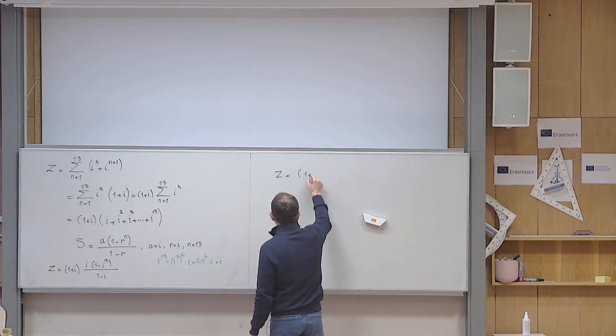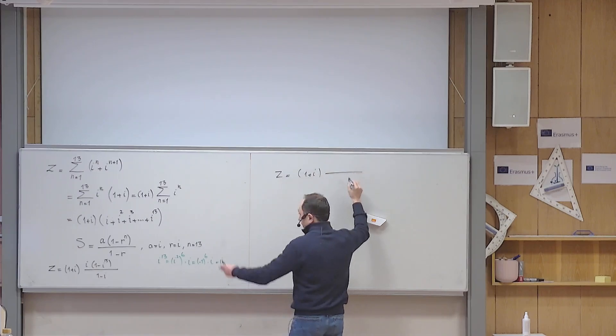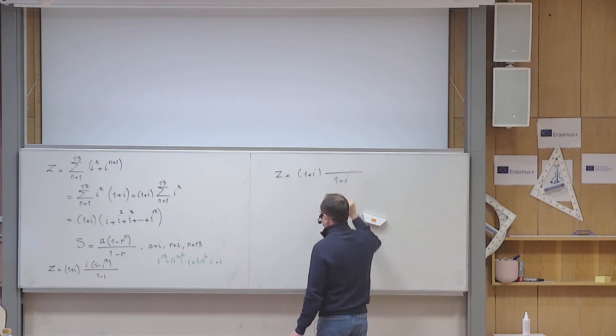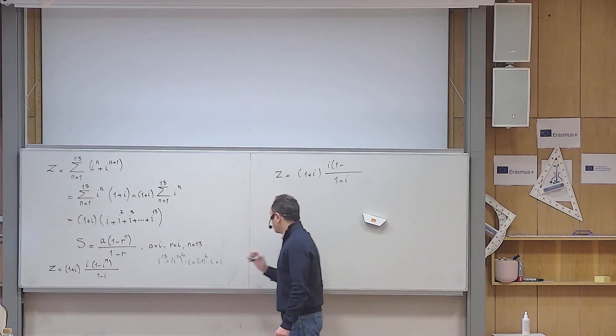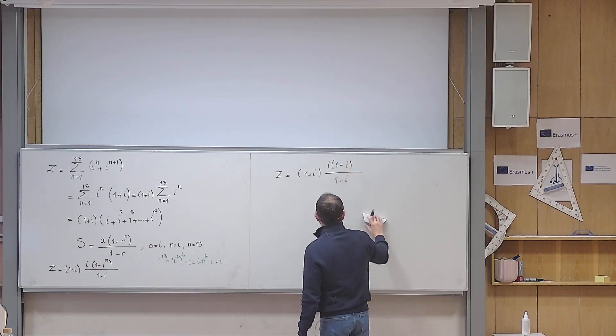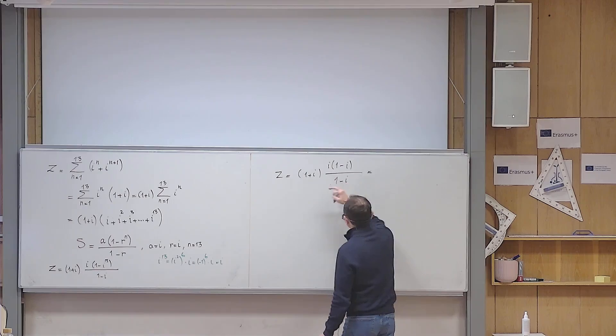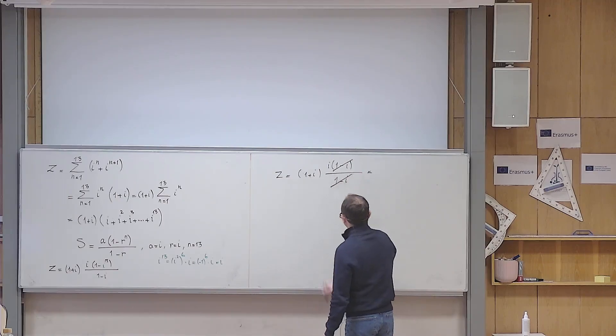So this becomes 1 plus i, then the denominator is 1 minus i, the numerator is i, 1 minus, instead of i to the 13, I put i again. And then I simplify that. So 1 plus i, by the way, this 1 minus i is completely gone. And this problem becomes much simpler now.